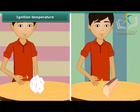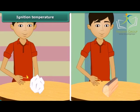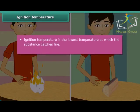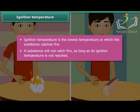A paper burns when lighted with a matchstick. Now bring the matchstick close to a piece of wood — the piece of wood does not catch fire. One lighted matchstick is not able to burn the piece of wood, but a piece of paper burned quickly. This is because the piece of wood has not reached its ignition temperature. Ignition temperature is the lowest temperature at which a substance catches fire.